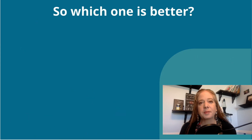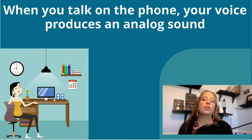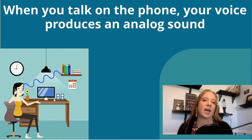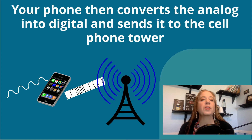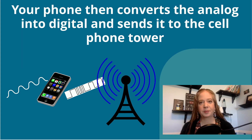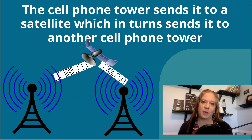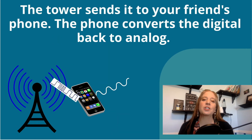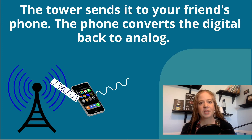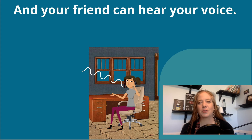So which one is better? When you talk on your phone, your voice produces an analog sound. Your phone then converts the analog into digital and sends it to the cell tower. The cell phone tower sends it to a satellite, which in turn sends it to another cell phone tower. The tower sends it to your friend's phone and the phone converts the digital back to analog, and your friend can hear your voice.